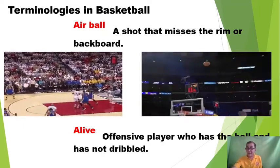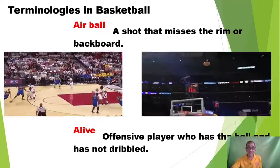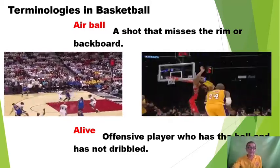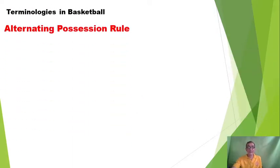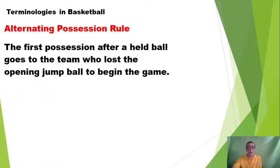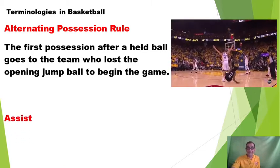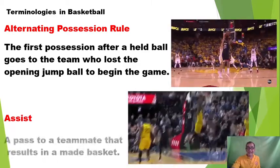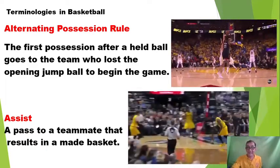I want you to try to check all the videos that I am playing so that you are familiar with these following terminologies in basketball. The next one is the alternating possession rule — this is the first possession after a held ball, which goes to the team who lost the opening jump ball to begin the game. And assist — it is a pass to a teammate that results in a made basket.